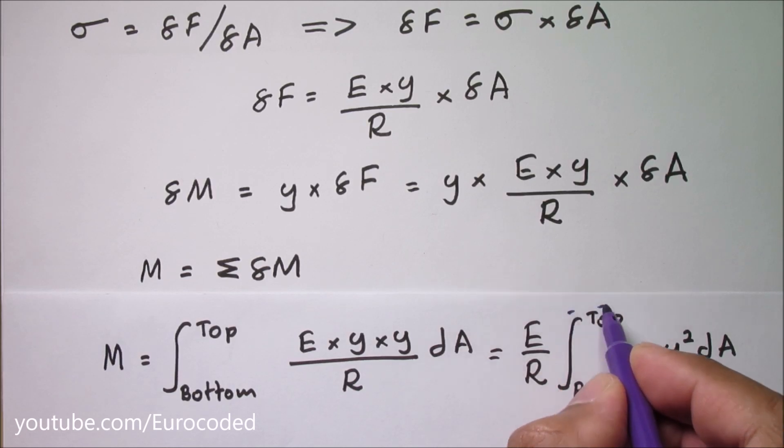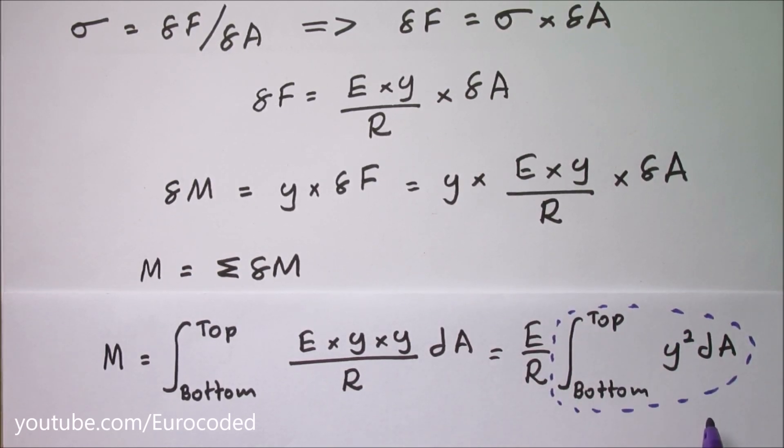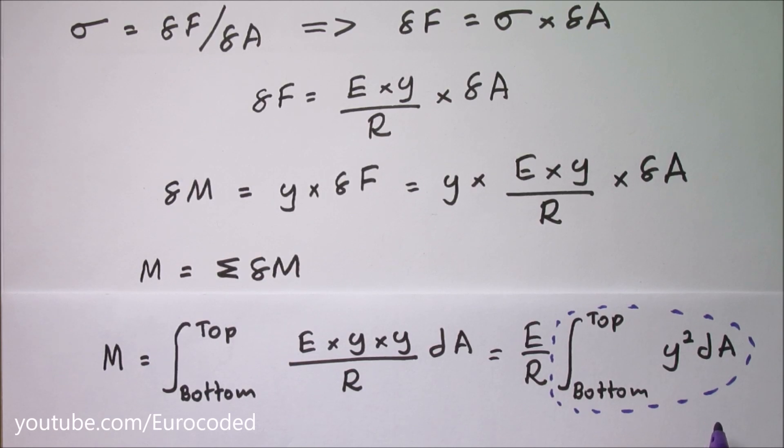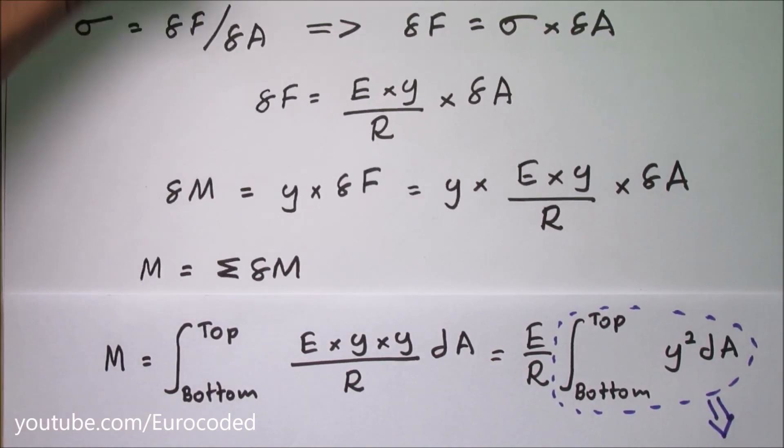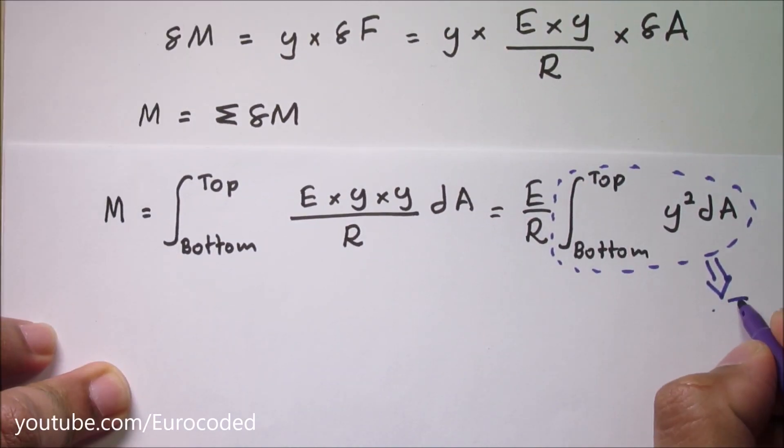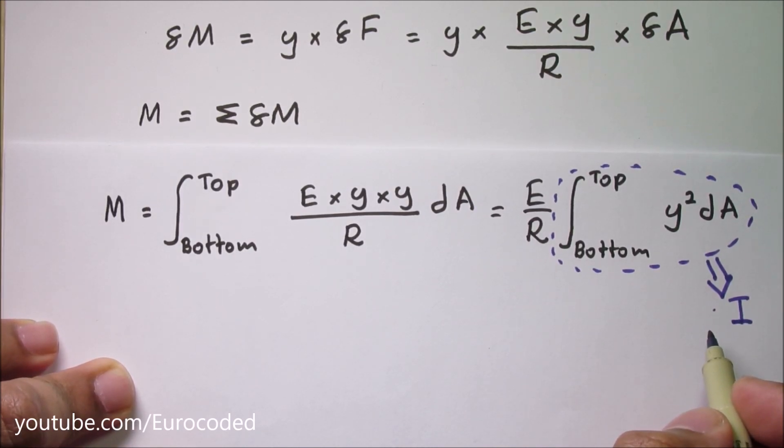Now we know what this is. By definition this is the second moment of area of the section about neutral axis and this is noted as capital I. This is also known as the moment of inertia.